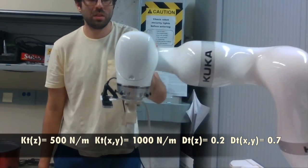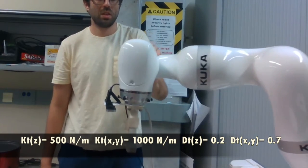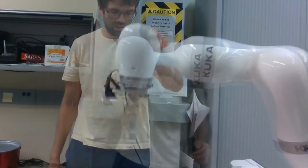Alternatively, with low stiffness and high damping, the robot acts as a less elastic spring but is still soft in the user-defined Cartesian axes.